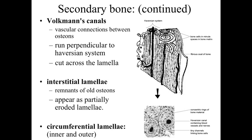We can also find interstitial lamellae — layers that don't appear in nice concentric tree ring patterns. These are remnants of old osteons, essentially portions of old structures that have been eroded away and whose intervening space has been replaced by a new Haversian system. Around the outer or inner surface of the bone, we can find circumferential lamellae — layers of collagen and bone wrapped around the entire structure of the bone, running not within a Haversian system but around the gross anatomical structure of the bone itself.